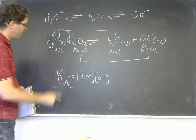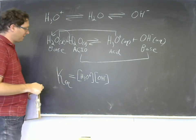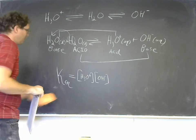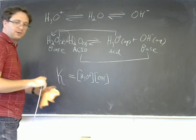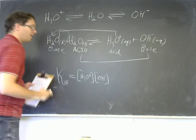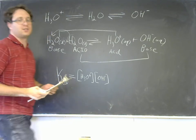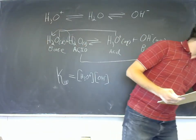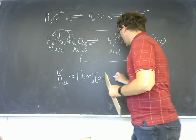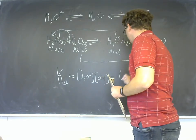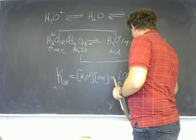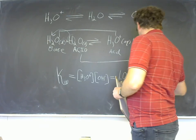And this reaction is so special, so important, that we will call that equilibrium constant KW, for the water dissociation constant, and KW has a value of 1.00 times 10 to the negative 14th.